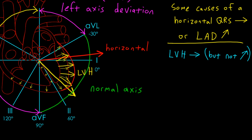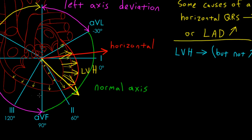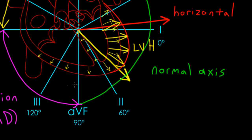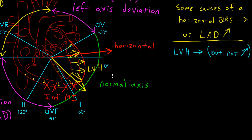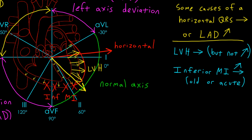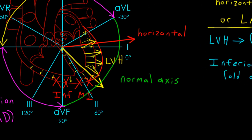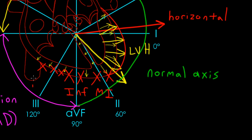Alternatively, you could take away forces in the vicinity of the inferior leads — such as due to an inferior wall MI. An inferior wall myocardial infarction in the vicinity of leads 2, 3, and AVF can produce a QRS axis that's horizontal or leftward. Most inferior MIs involve the inferior wall of the left ventricle; however, right ventricular MIs, also classified within the inferior family, can produce similar changes in the QRS axis.